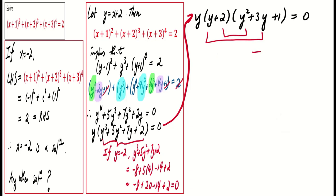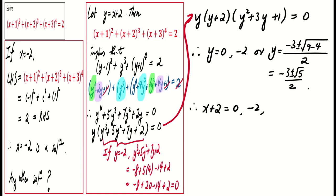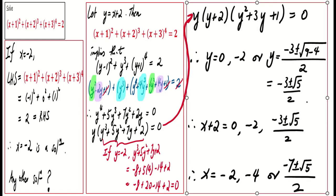This implies that y equals 0, y equals negative 2, or y² + 3y + 1 = 0, which gives y equals (−3 ± √5) / 2. Therefore, x equals negative 2, negative 4, or (−7 ± √5) / 2. These are the four solutions to this fourth-degree polynomial equation.